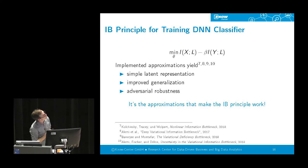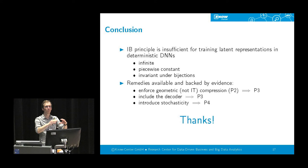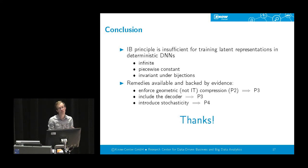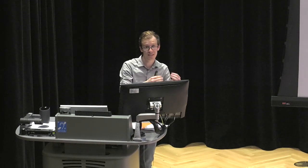Given all the problems we have seen, it is the implemented approximations that make the information bottleneck principle work in practice, rather than the principle on its own. Using the bottleneck principle for training deterministic DNNs is not a good idea. But you can use it for stochastic DNNs, include the decision rule, or enforce geometric rather than information-theoretic compression to get simple representations. Thank you very much for your attention.